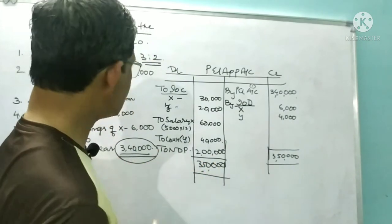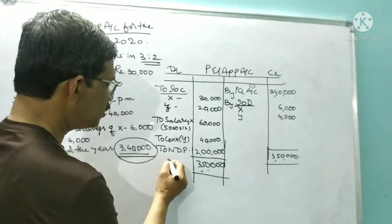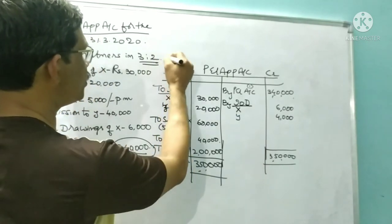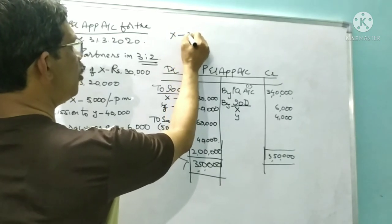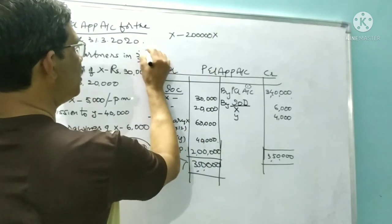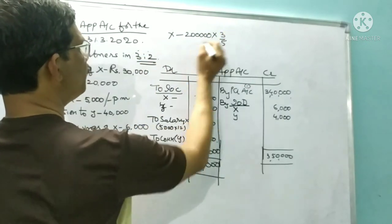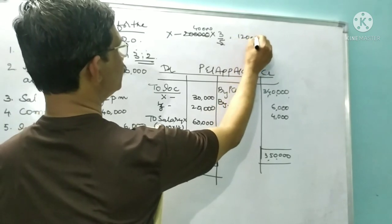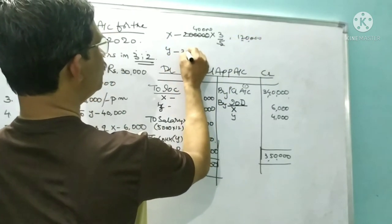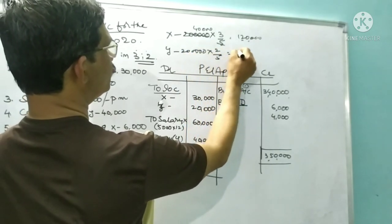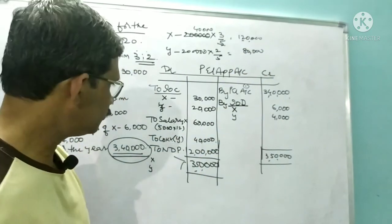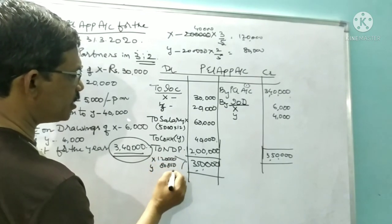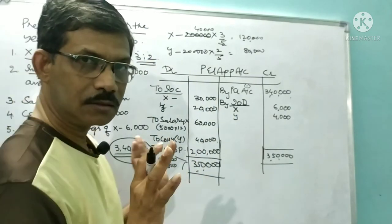How to distribute this 2,00,000? In the ratio 3:2. X's share: 2,00,000 × 3/5 = 1,20,000. Y's share: 2,00,000 × 2/5 = 80,000. So X gets 1,20,000 and Y gets 80,000, totalling 2,00,000. This is the P&L appropriation account.